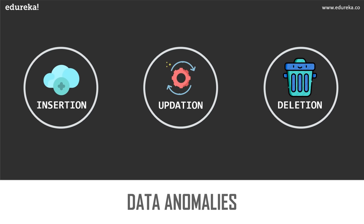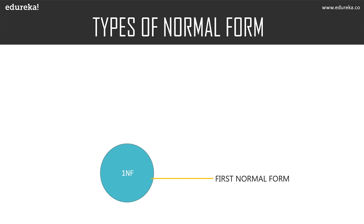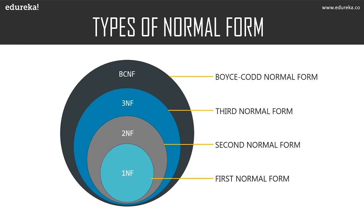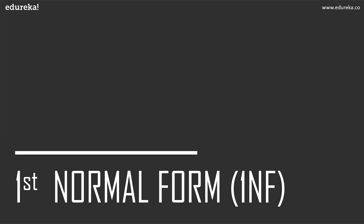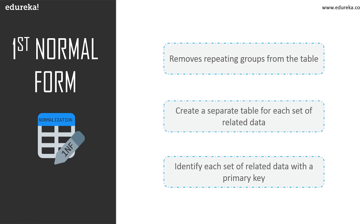To eliminate all these anomalies, normalization came into existence. We will focus on the essential normal forms: first normal form, second normal form, third normal form, and Boyce-Codd normal form. In first normal form, we tackle the problem of atomicity. Atomicity means values in the table should not be further divided — a single cell cannot hold multiple values. If a table contains composite or multi-valued attributes, it violates the first normal form.